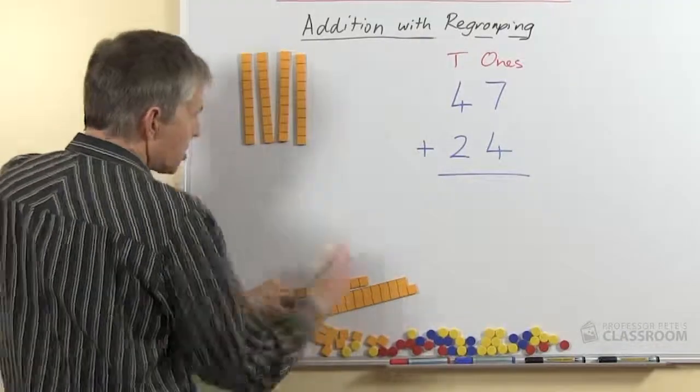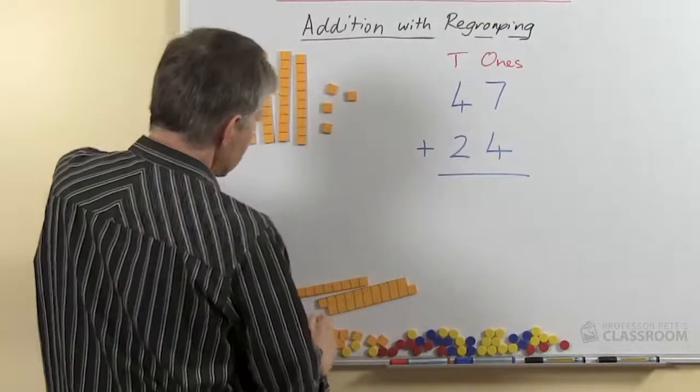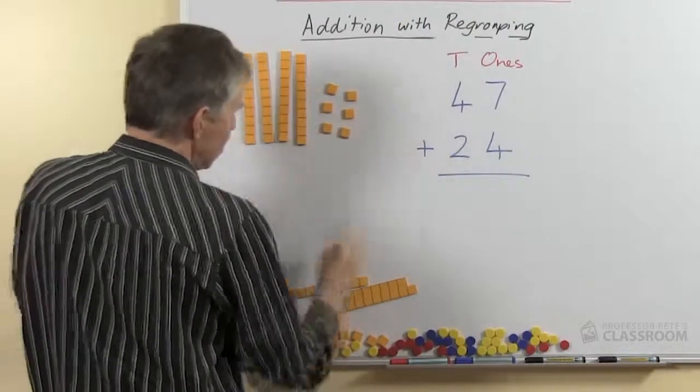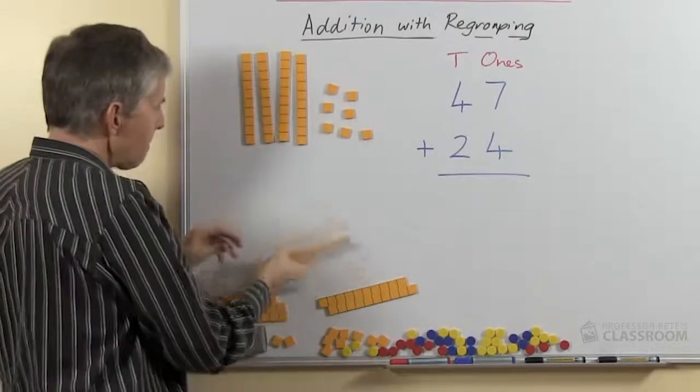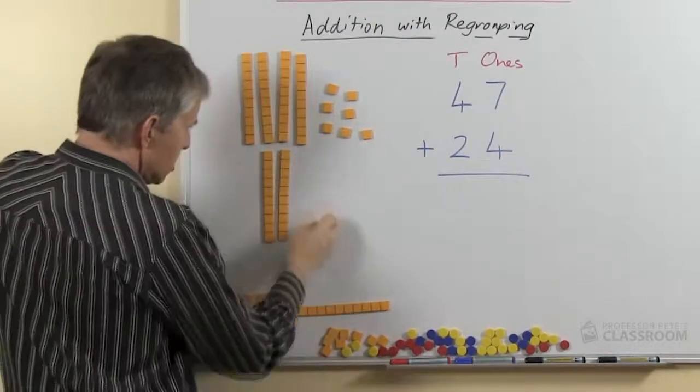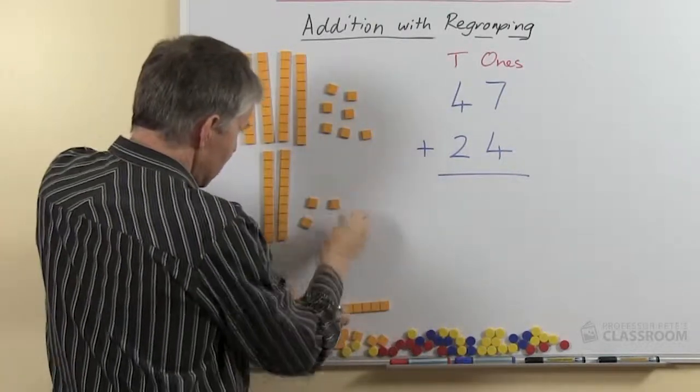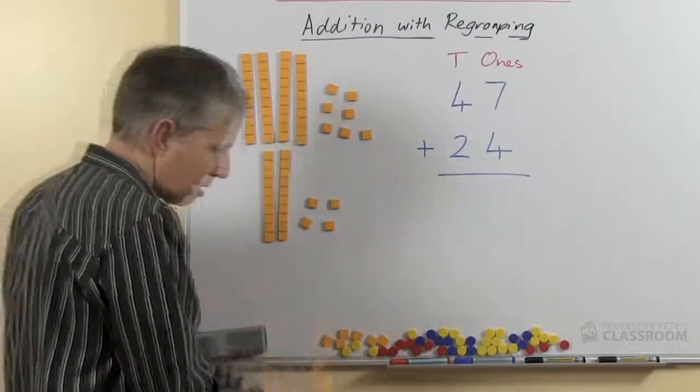I've put out the 47 already. I'm using my special magnetic place value blocks or base 10 blocks. They're my 7 ones, so you can see that shows 47. Let me put out some more blocks here, so there's 2 tens for the 20 and 4 for the 4 ones. I'm going to remove those so they're not in the way.